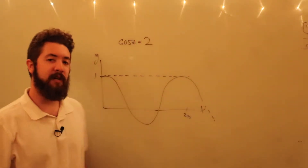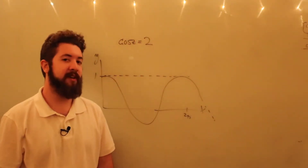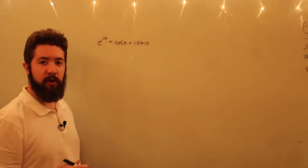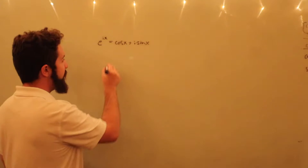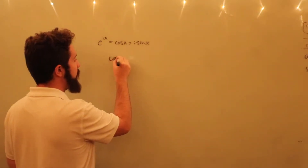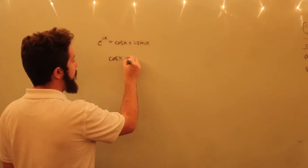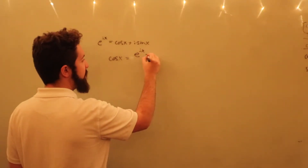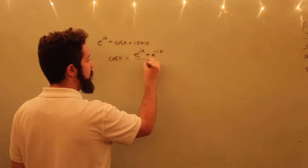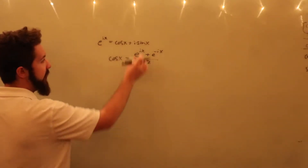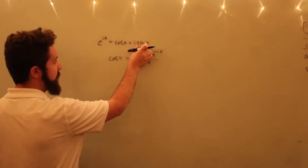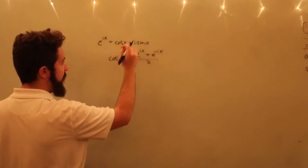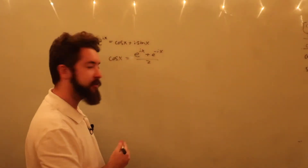Is there a complex number z such that cosine of z equals 2? Because of Euler's formula, we have the following two properties: the cosine of any real number is going to be equal to e to the ix plus e to the negative ix, divided by 2. This is because the negative gets distributed throughout the sine, so the sine cancels. Then you divide by 2 to get rid of an extra factor, and you get the cosine function.